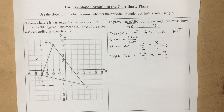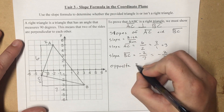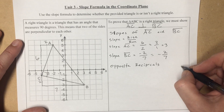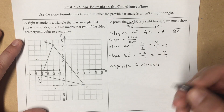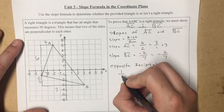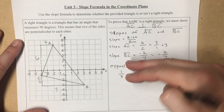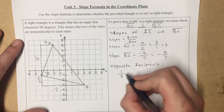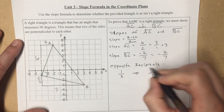The key rule about slopes and perpendicular lines is they have to be opposite reciprocals. A reciprocal means flipping your numerator and denominator, and opposite means changing the sign. So if we have a slope of positive one-third, the opposite reciprocal would be negative three.